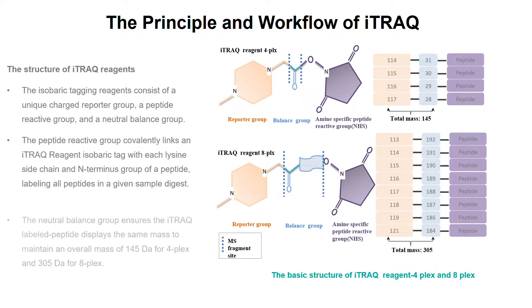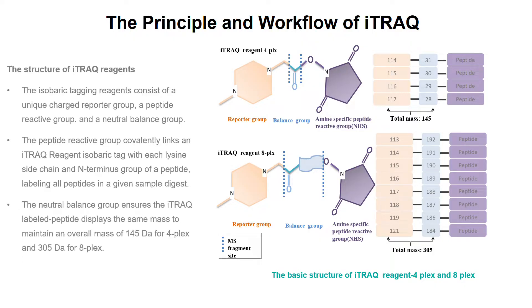The neutral balance group ensures the iTRAQ labeled peptide displays the same mass to maintain an overall mass of 145 Dalton for 4-plex, and 305 Dalton for 8-plex.